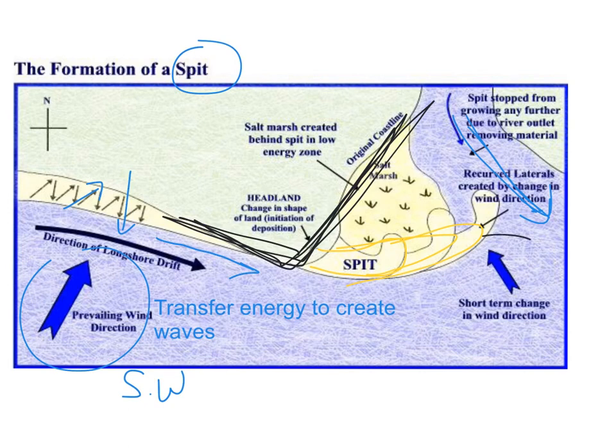Occasionally the wind will change direction and it will push parts of the spit backwards as it grows. These are called recurves.